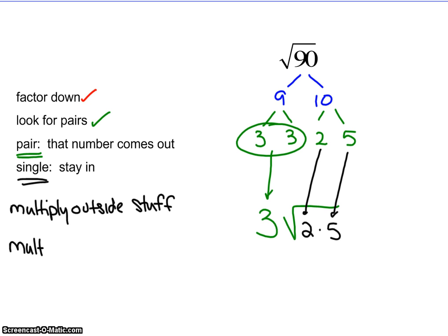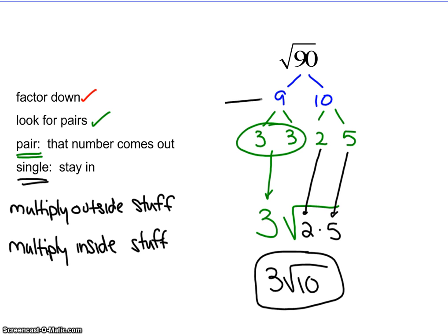So the two stays inside, the five stays inside, and we multiply the outside stuff together. That's how we're going to simplify those down. Since it's just a three on the outside we're good, but I'm going to take that two times that five and get ten. If I recognize that nine's a perfect square, some people say the square root of nine is three and take that out, and that's fine.